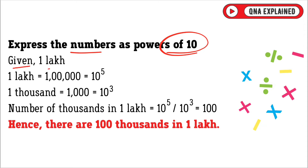Given 1 lakh: 1 lakh is equal to 1,00,000, which equals 10 raised to the power 5. 1,000 is equal to 10 raised to the power 3.